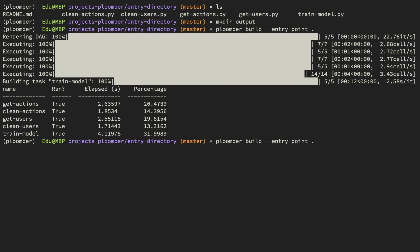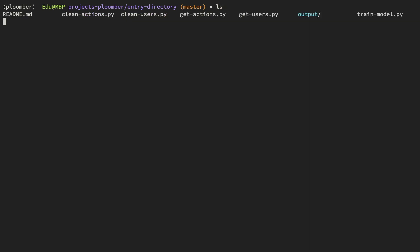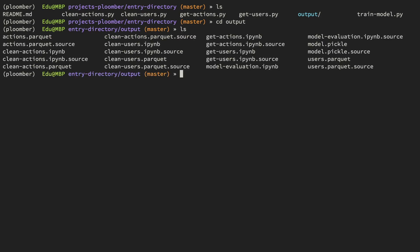Let's take a look at the output folder. We now see a bunch of files here. We see the notebooks that were generated from the scripts. We see some data files and also the model that we trained and saved. We also see some source files. These are just files that Plumber uses to keep track of source code changes. Let's open one of the notebooks.